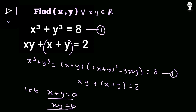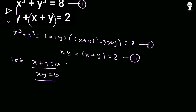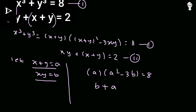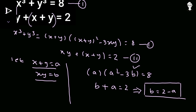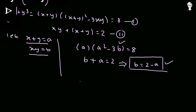Rewriting both equations with the substitution, the first equation becomes a(a² − 3b) = 8 and the second equation becomes b + a = 2. From the second equation, subtracting a from both sides gives b = 2 − a.